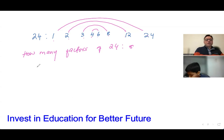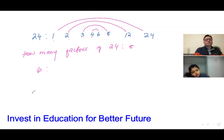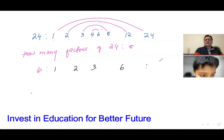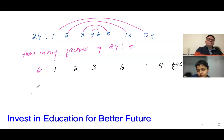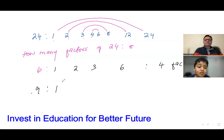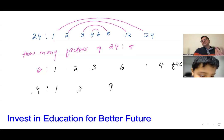Let's look at the number 6. How many factors can you write for 6? You can do 2 times 3 and 1 times 6, so there are four factors. How about the number 9? You can do 1 times 9, and 3 times 3 — that's 3 squared. So there are three factors of 9.